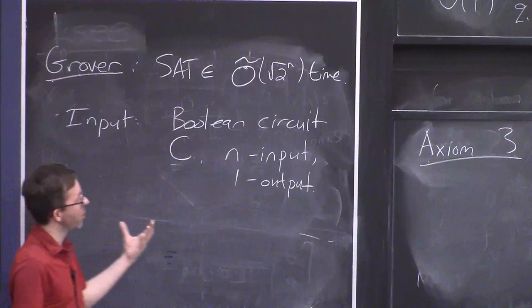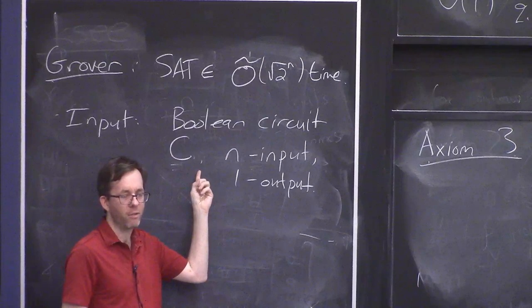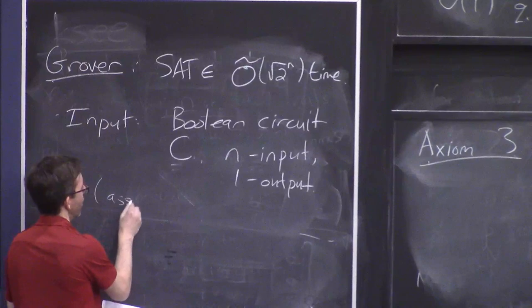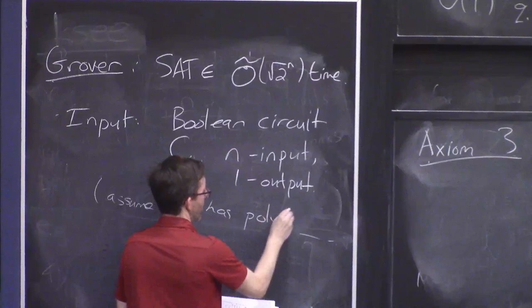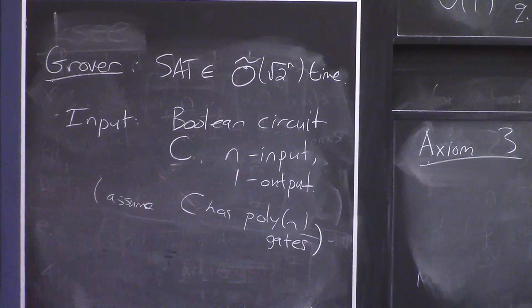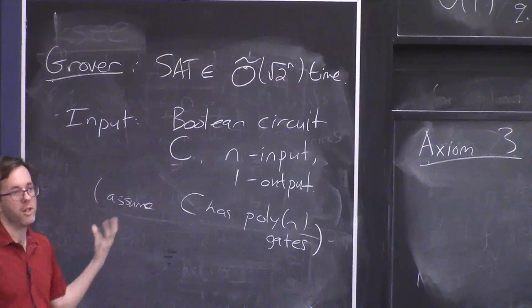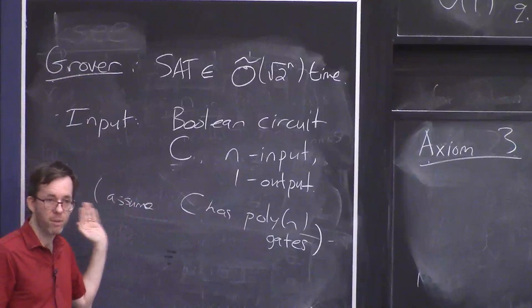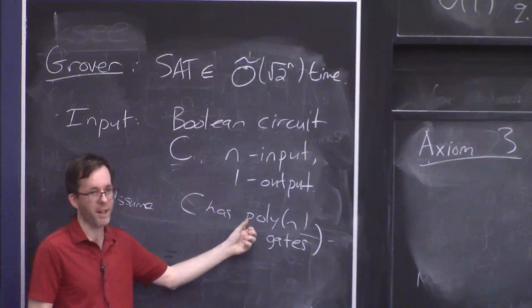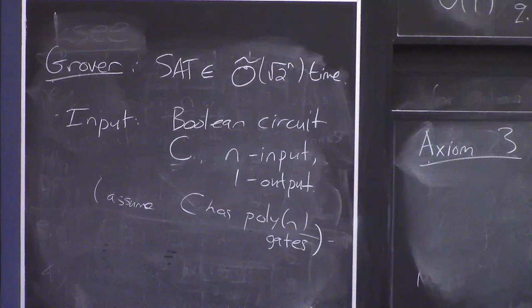Let me make a few simplifications. If you're into complexity theory, there are two parameters to worry about: the number of inputs n to the circuit, and the number of gates in the circuit itself. But let's assume C has poly n gates, which is the reasonable case, so we only have one parameter n. In this case, we still believe that solving the SAT problem should take 2 to the n time — we don't know a much better algorithm than just enumerating all 2 to the n strings and plugging them into C.